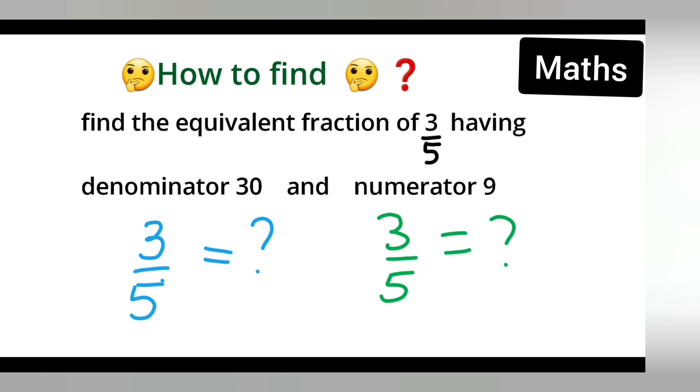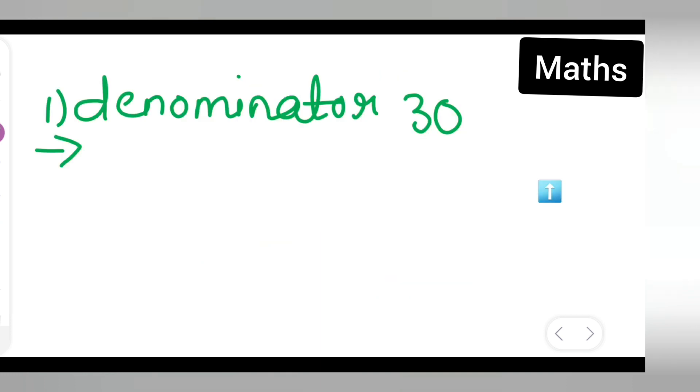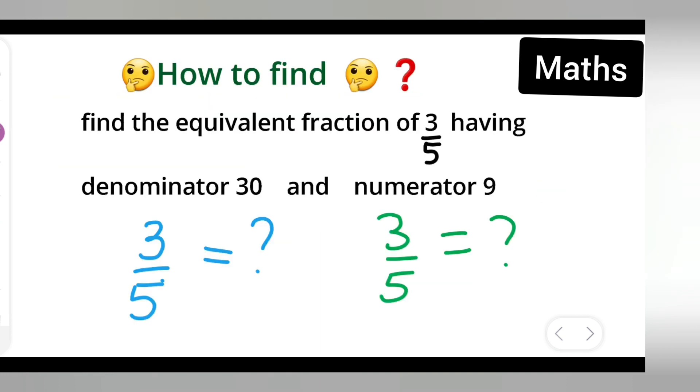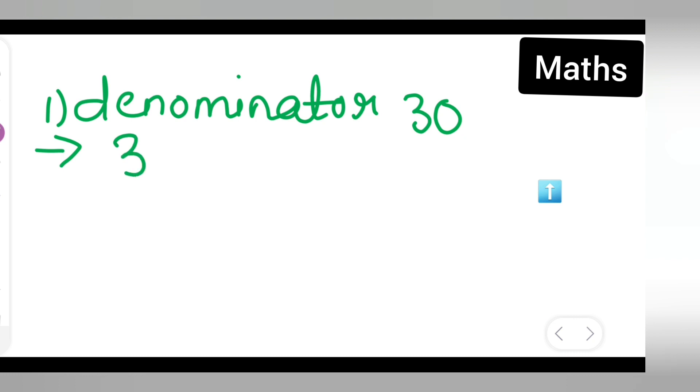Let me start. First, I'll write 3/5 here and the denominator should be 30. So you have to multiply both numerator and denominator by 6. So 3×6 is 18 and 5×6 is 30. So basically here you got your denominator to be 30.